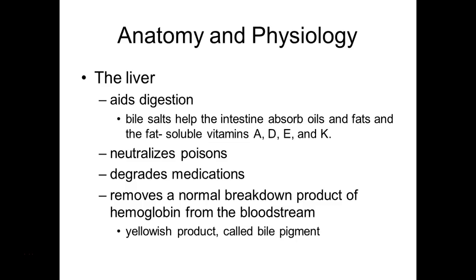Your liver helps neutralize poisons. Whenever you take a medication, your liver considers it a poison and breaks it down over time. Your body then excretes it by filtering it through your kidneys into your urine. If people have damage to their liver or kidneys, it can affect how medications work and how they affect the body — that can be a serious consequence.